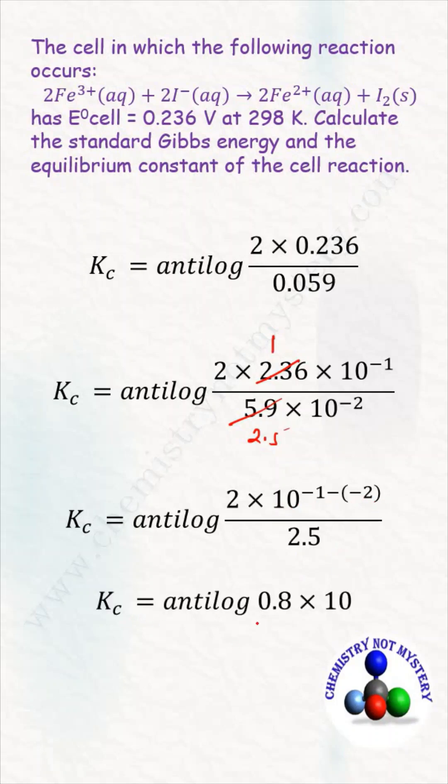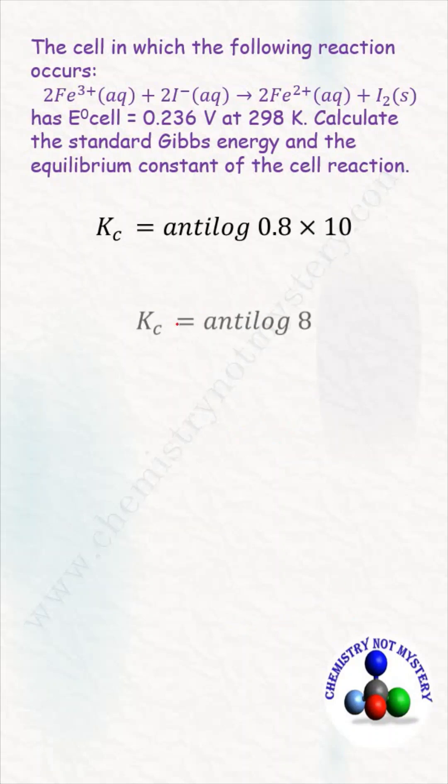When you solve this you will get Kc = antilog(0.8 × 10). When you solve it you will get Kc = antilog(8). When you take the antilog of 8 you will get 9.03 × 10⁷, which is the value of equilibrium constant.